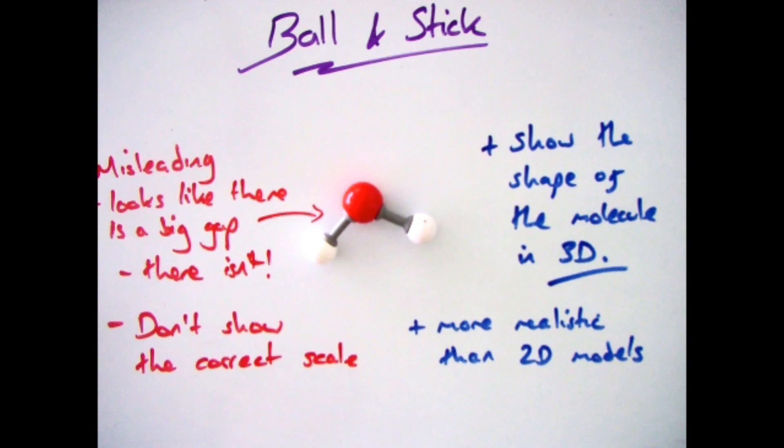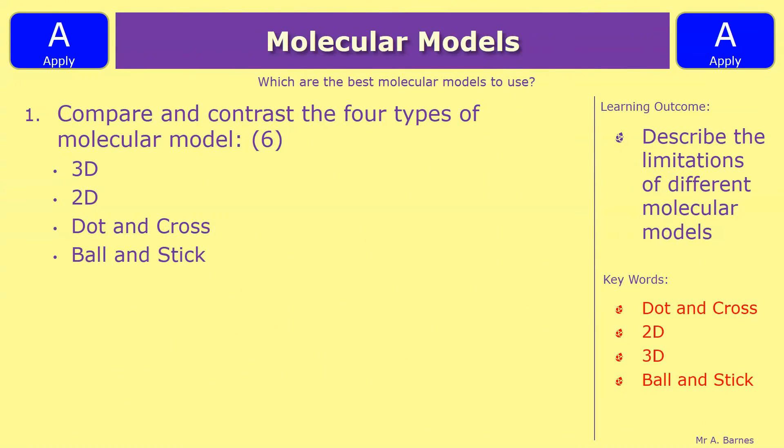So that's everything you need to know on the different types of models. Right, now that we've done that, let's have a look at the question for this then, which is a lovely six-marker. The question is: compare and contrast the four types of molecular model—you've got 3D, 2D, dot and cross, and ball and stick.